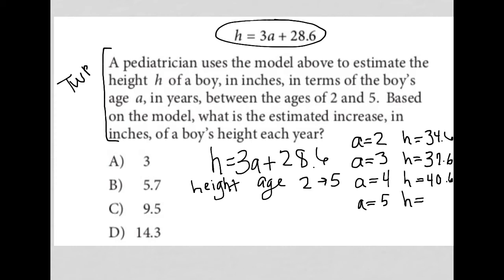So even without going that far, you may have already noticed that the trend here is that each year my height increases by 3, right? So from 34.6, I add 3, I get to 37.6. I add 3, I get to 40.6. I add 3, I get to 43.6.